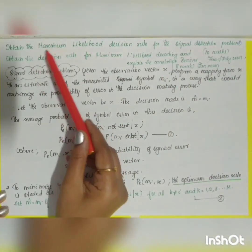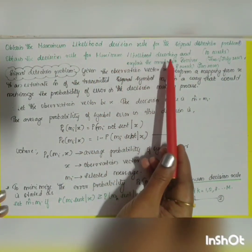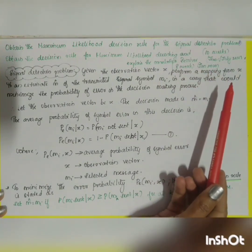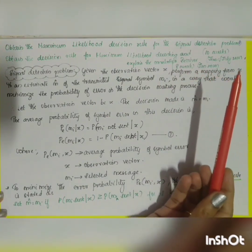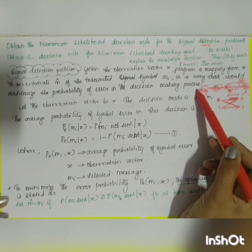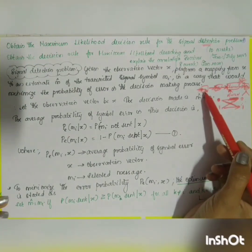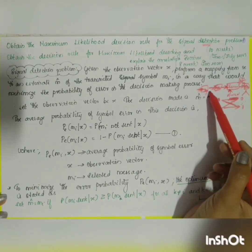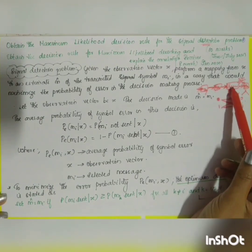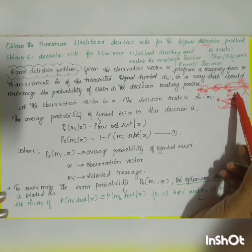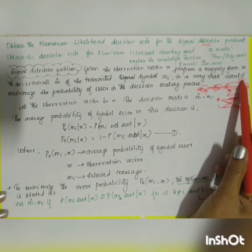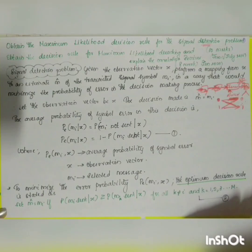The next question is to obtain the maximum likelihood decision rule for the signal detection problem — worth 10 marks from June/July 2018, repeated in many other question papers. Suppose we are transmitting a digital message signal passed through the transmitter, then through the channel where noise is added. The output of the channel is the signal plus noise, which is given to the receiver.